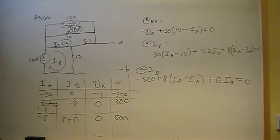So now we have three equations and three unknowns. And we can solve that with our simultaneous equation solver. So then we have three equations, three unknowns. We have negative 30, zero, negative 1, negative 300.